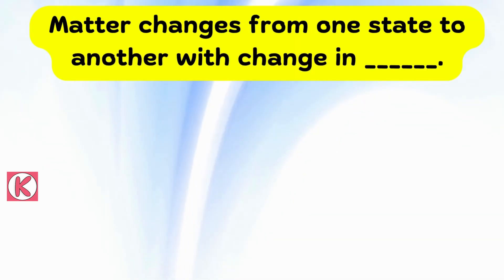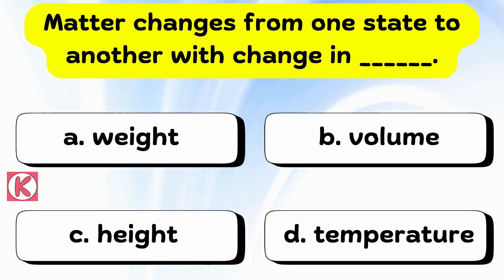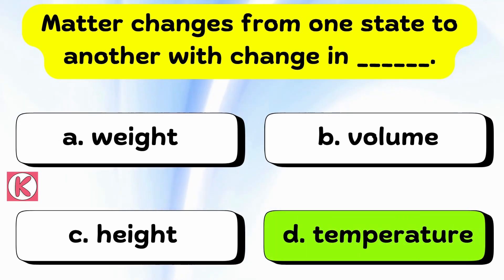Next question. Matter changes from one state to another state with change in dash. Correct answer is option D, Temperature.